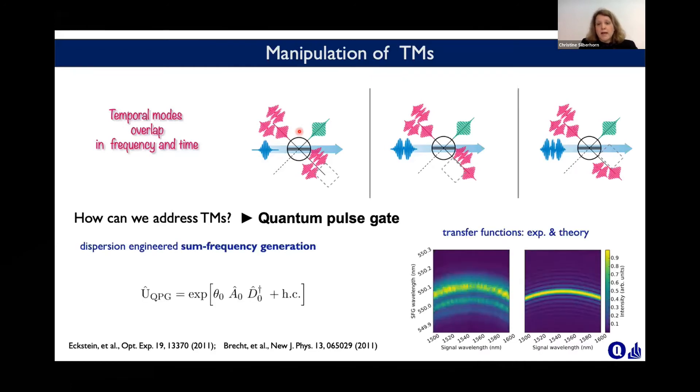But then comes the problem I just told you at the beginning, these temporal modes overlap in frequency and time. So what you need is somehow an add-drop filter. So you need some knob, and for us it's a pump pulse, where you're able to select which temporal modes you are addressing. We do that by a device which we pioneered, which is a quantum pulse gate. Let me briefly show what that is. It's a dispersion engineered sum frequency generation with a transfer function, where basically you have a flat transfer function. In the same way that we've engineered parametric down conversion sources to have only one spectral temporal mode, we do the same for sum frequency generation. And that does the trick to have this quantum pulse gate.